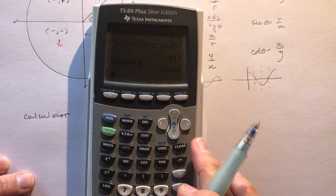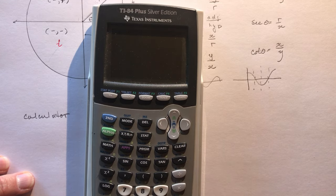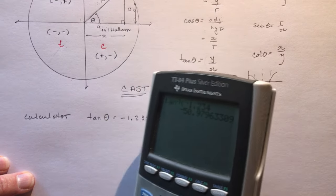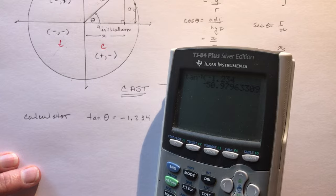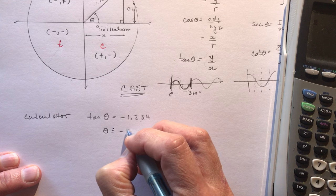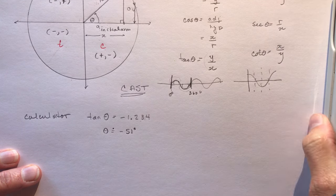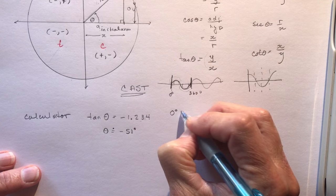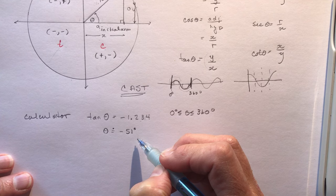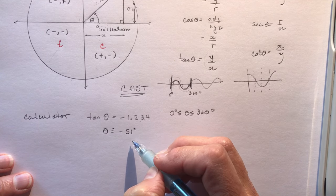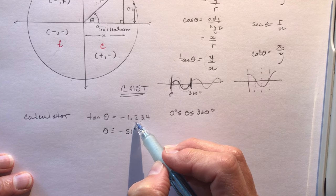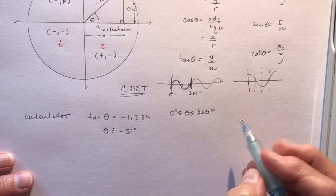You get out your calculator and do second function tan⁻¹ of -1.234, and you get approximately -51 degrees. So theta is approximately equal to -51 degrees. Now, most often your teacher is going to say find theta where theta is between 0 and 360 degrees, so a negative angle would not be the answer your teacher wants.